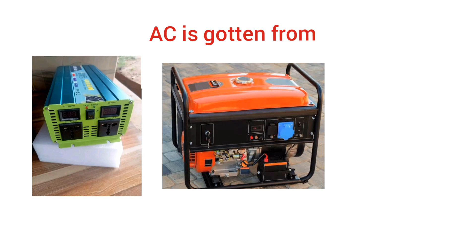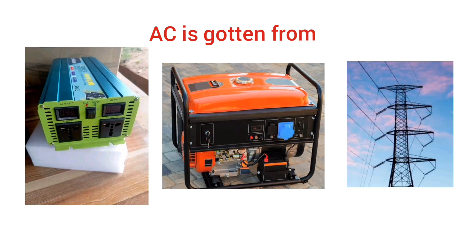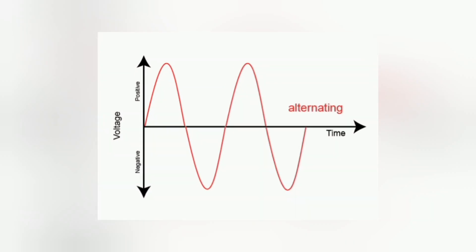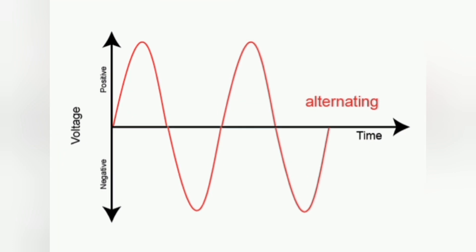This alternating type of electricity is realized from inverters, the public grid, and generators. In the case of inverters, the primary input is DC, so we are not focusing on inverters here. In the case of the public grid, we may not have access to its components, so it's somewhat ambiguous. But we can easily lay our hands on generators and their components. The most important thing is the output waveform — the same alternating waveform — for generators, inverters, and the public grid.